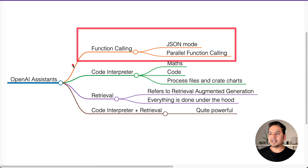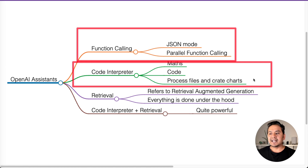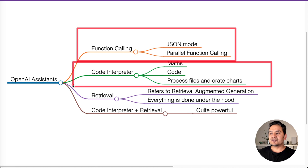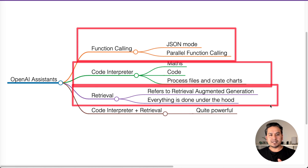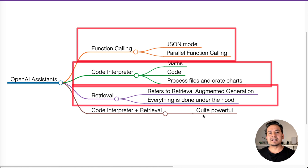The next one is about the code interpreter. It might be confusing because as the name suggests it is the code interpreter, but you can do math, write code, process code, process files, and create charts out of it. Then there is the last part which is really interesting — the retrieval part. What we can do is just upload a document and then everything is done under the hood, and then we get the results. When we combine the code interpreter and retrieval together, we can see quite powerful things. I will show you one example where we upload a PDF and create a chart from a table inside it.